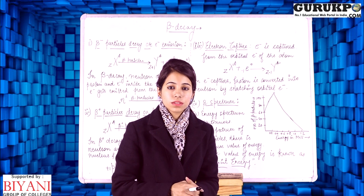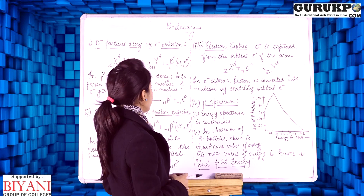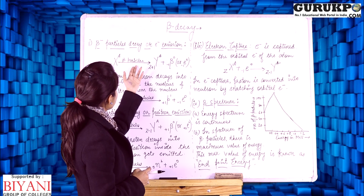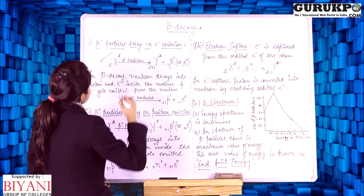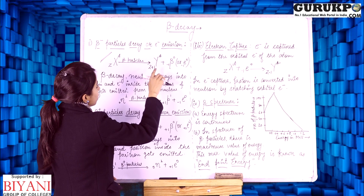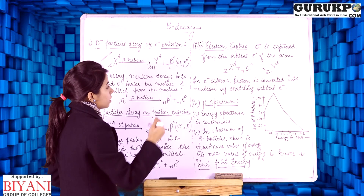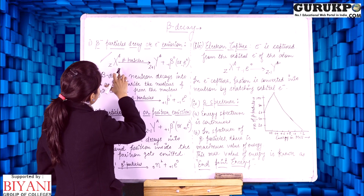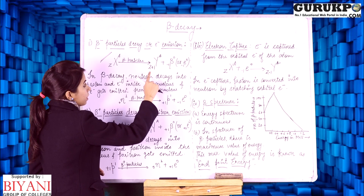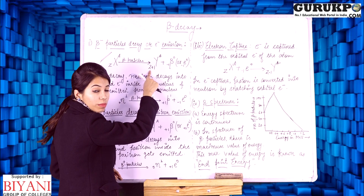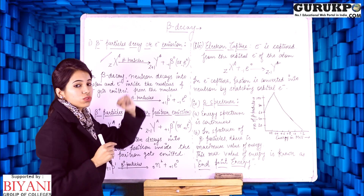First, let us consider beta minus particle decay, or electron emission. The emission of beta minus particles from the nucleus is represented by the following reaction. In this process, the atomic number of the new element increases by one and the mass number remains the same. As we can see in the equation, the parent nucleus has atomic number Z and mass number A, and the new element formed has atomic number increased by one and mass number the same. That means these two elements are isobars.